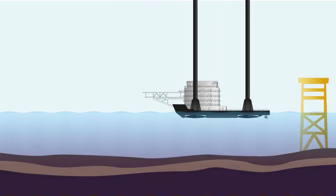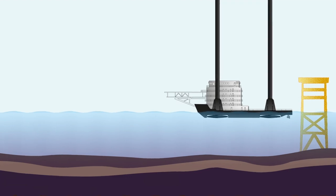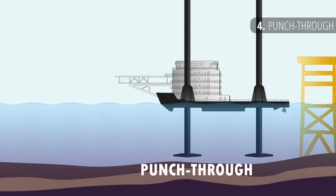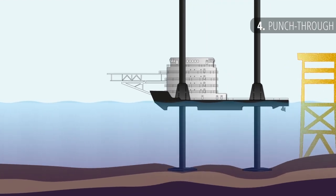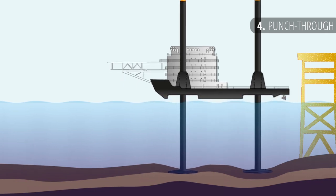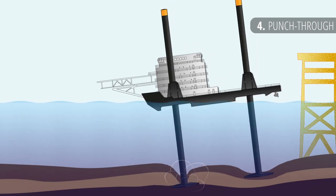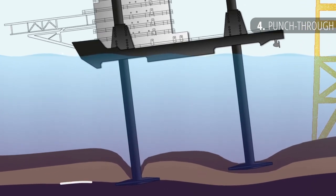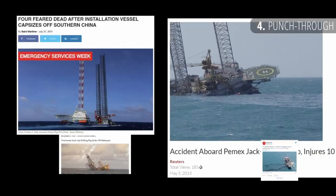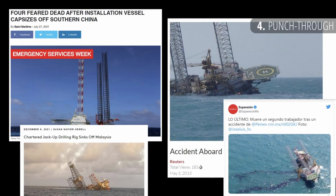This finally brings us to the final and the biggest hazard related to jackups: a punch-through. It is a rapid displacement of soil, causing the barge to lose its foundation. The leg will penetrate until it meets the hard soil or until the hull hits the water and holds itself by buoyancy. It can cause catastrophic damage to the vessel and loss of lives.